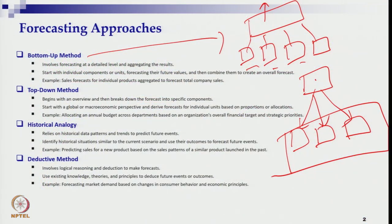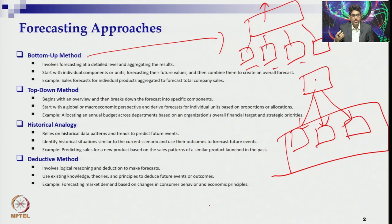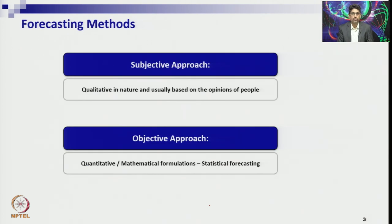The four approaches — bottom-up, top-down, historical analogy, and deductive — are approaches, not techniques. When you adopt any of these four approaches for forecasting or decision-making, you need methods and techniques. Forecasting methods and techniques are defined in two categories: one is the subjective approach, and the other is the objective approach.